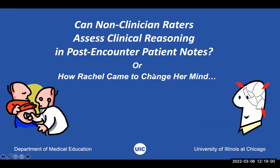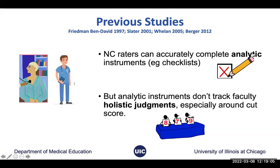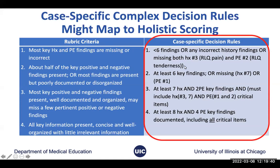That led us to ask: can we train non-clinician raters to score these notes accurately and reliably? Our comparison was between faculty raters and non-clinician raters — standardized patients and skills instructors who are EMTs and paramedics working in our simulation center. Previous studies said not so much: non-clinician raters can do checklists, but those analytic instruments don't track the holistic judgments faculty make, especially for low-scoring students around the cut score. But we thought our complicated decision rules might actually track those faculty holistic judgments. So we said, let's give it a try.